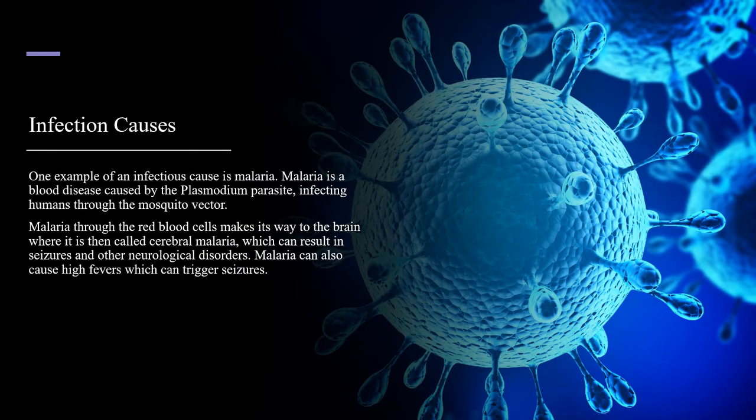One example of an infectious cause is malaria. Malaria is a blood disease caused by the plasmodium parasite, infecting humans through the mosquito vector. Malaria through the red blood cells makes its way to the brain, where it is then called cerebral malaria, which can result in seizures and other neurological disorders. Malaria can also cause high fevers, which can trigger seizures.